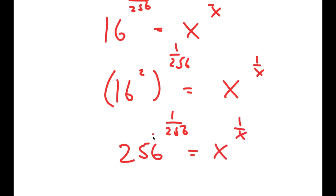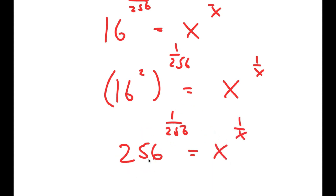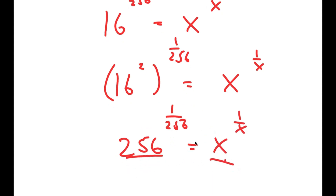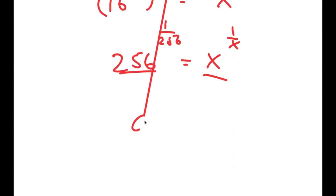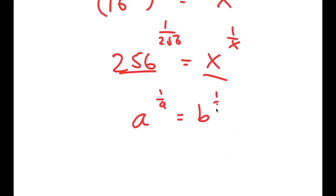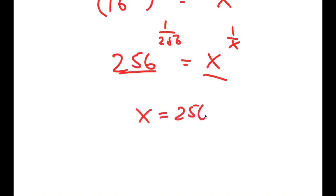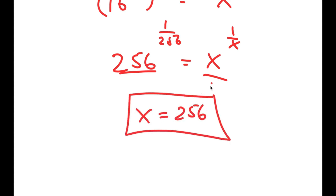Now notice that these numbers are the same. This is in the form a to the power of 1 over a is equal to b to the power of 1 over b, meaning a is equal to b. So x is equal to 256. That's my solution to this equation.